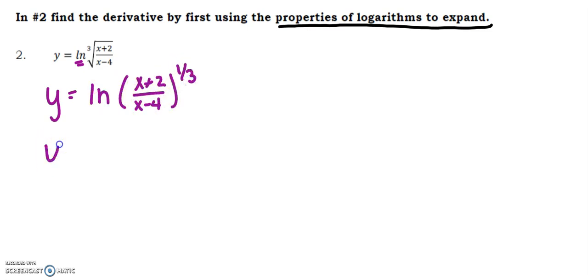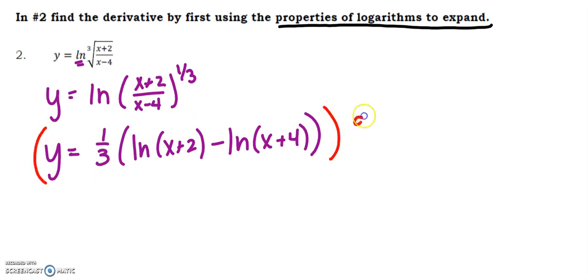This is the natural log of (x+2)/(x-4) all to the one-third power. Using properties of logs, notice I have not done any calculus yet. I can break this up into two separate logarithms with the one-third - you could distribute that in or just leave it where it is. Now I'm ready to take the derivative with respect to x.